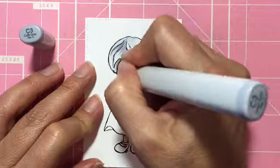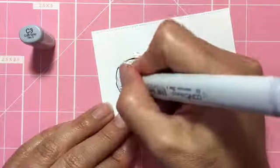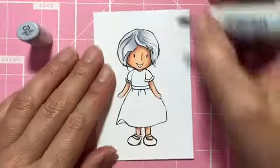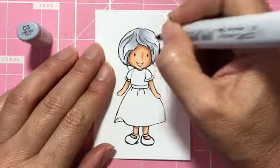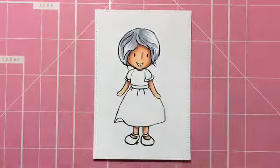Now I'm going over with C3 over the same areas that I just put down with the lighter color. I'm just doing some small flicks in the area that I just did with C1.